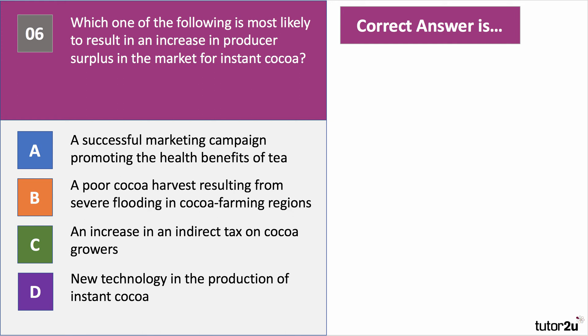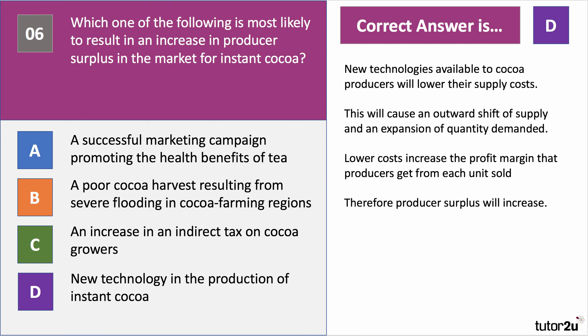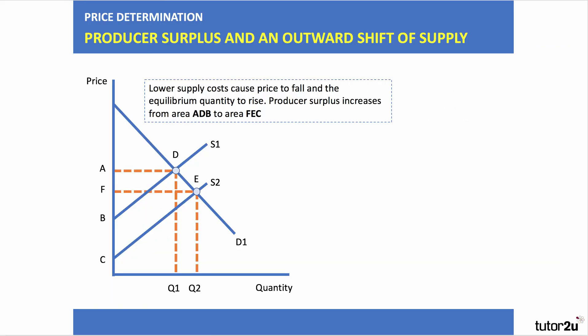Question six: which is most likely to result in an increase in producer surplus in the market for instant cocoa? The answer is D — new technology in the production of instant cocoa. New technology lowers supply costs, causing an outward shift of supply and expansion of quantity demanded. Lower costs mean more profit for every unit sold and therefore producer surplus goes up. In the diagram, S1 shifts to S2, price falls from A to F, producer surplus goes from A, D, B to F, E, C — the cocoa makers are making higher producer surplus.